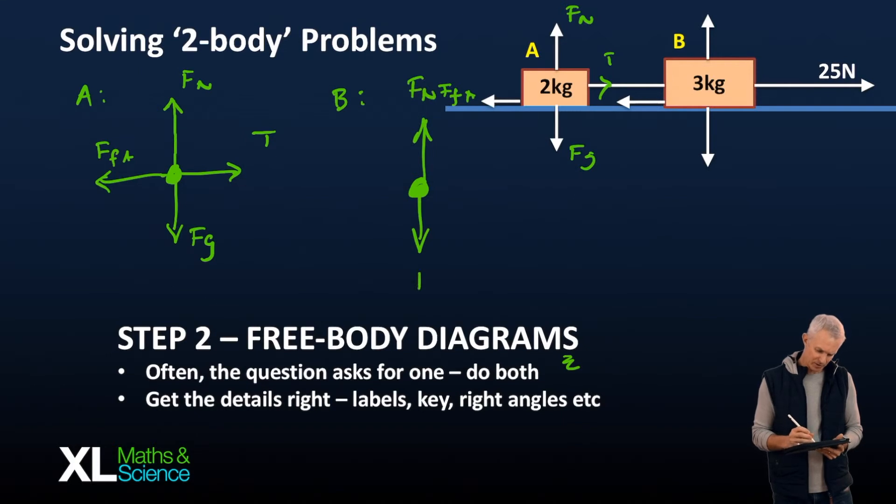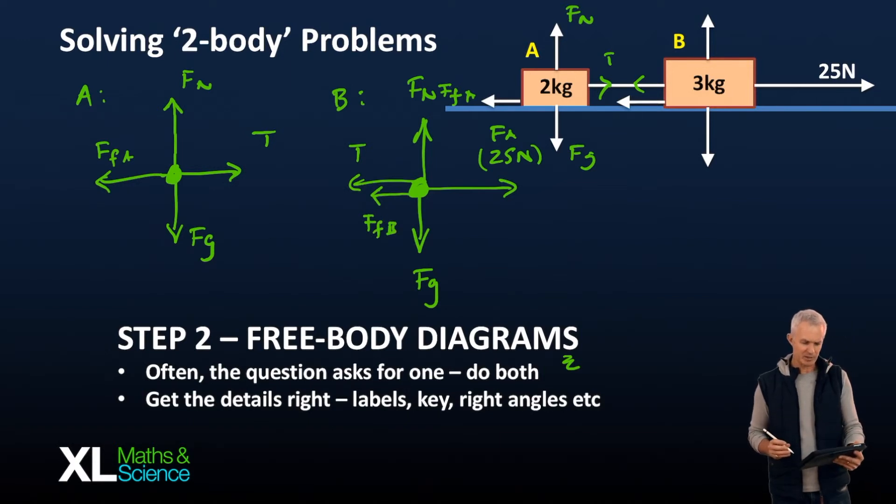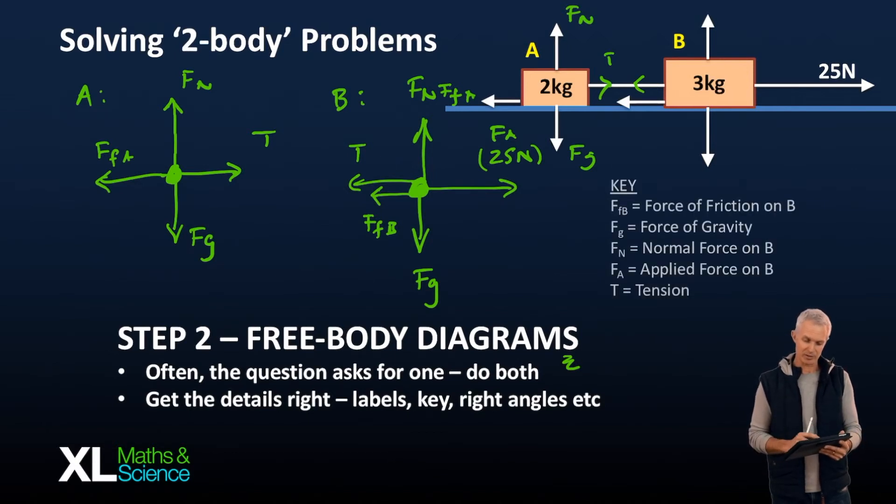Then B, once again we got gravity and normal. I'm sketching a little bit too fast, be careful of little silly mistakes like that. Where my lines are not connecting properly that would possibly lose me marks. Then we got our 25 newtons applied force. And then we got two forces to the left for B. So we got our tension and we've got our friction. And if I've done it as such with just letters, that's not enough for marks in this paper. So what we need to do is then put a little key on the right hand side. Just to show exactly what each of those forces are.